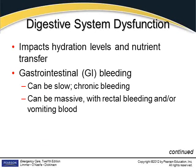Digestive system dysfunction impacts hydration levels and nutrient transfer. The biggest issue we see is gastrointestinal bleeding — GI bleeds. These can be slow chronic bleeding such as ulcers, or they can be massive, like a very ugly rectal bleed. Bleeds from high up in the GI system can cause you to expel bright red blood, vomit blood, have rectal bleeding, or have black tarry stools, which are actually digested blood. This is a disruption to both the digestive and cardiovascular systems because blood is being lost.